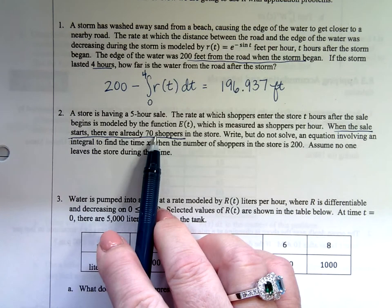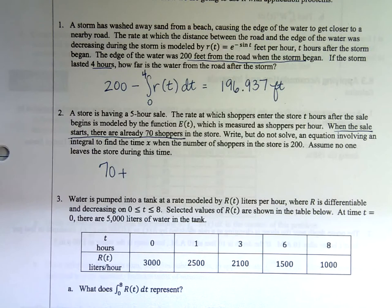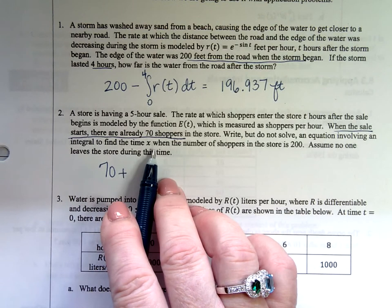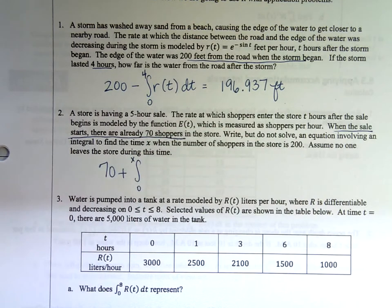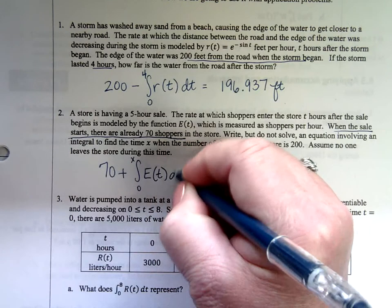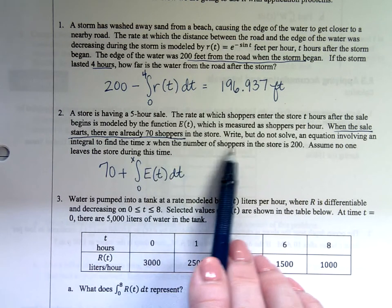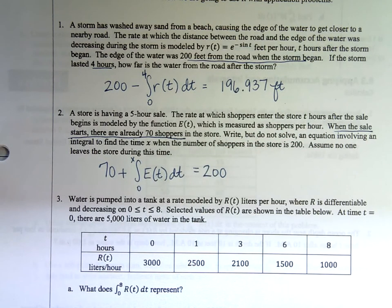This initial thing is always where you start. When the sale starts, there's 70 shoppers. I've got 70 shoppers plus whoever else enters. This one's going to be zero to x because you don't know what that number is. The function is E of t. When does this equal 200? That's it. You're done, because they only wanted you to set up the equation. They did not ask you to solve it.